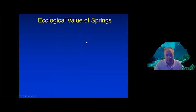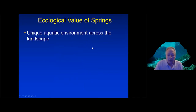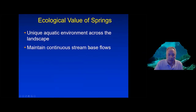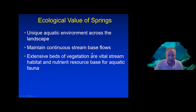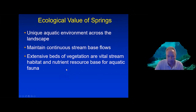To address some of the primary ecological value of springs: first, these are unique aquatic environments across the landscape and they maintain continuous stream-based flows, which is important for the communities associated with these habitats. In terms of substrate, the extensive beds of vegetation are important habitats for aquatic organisms — the plants and animals associated with them — and this is the nutrient resource base for the entire food chain.